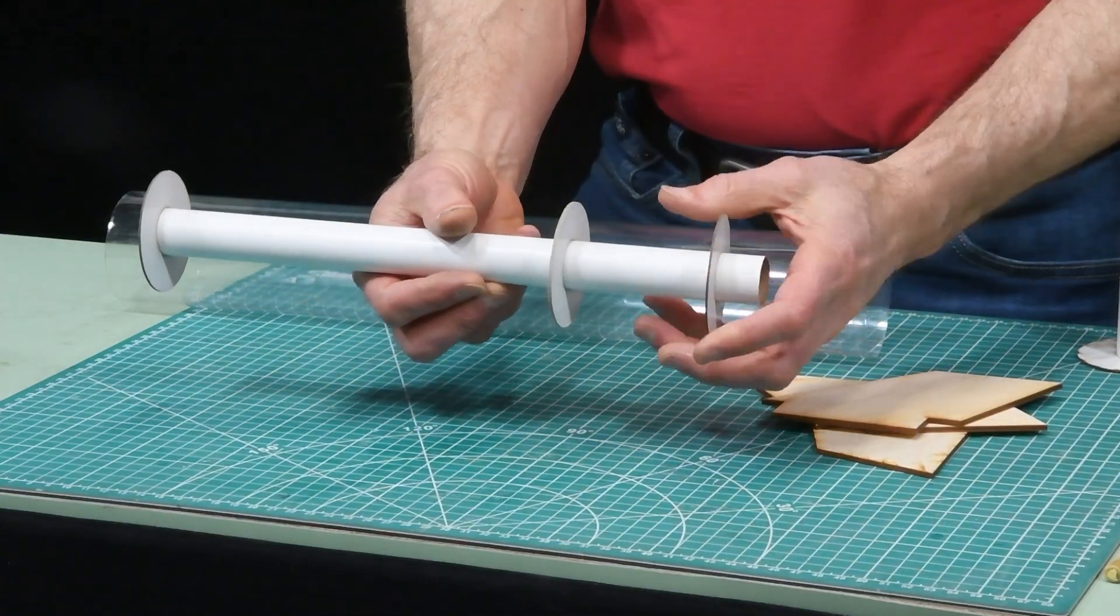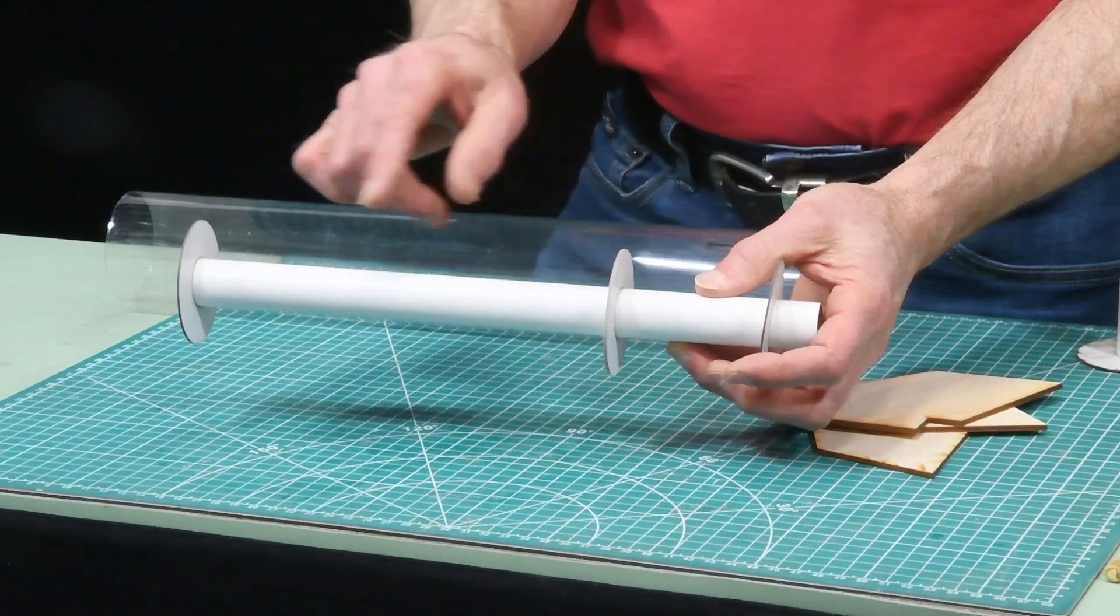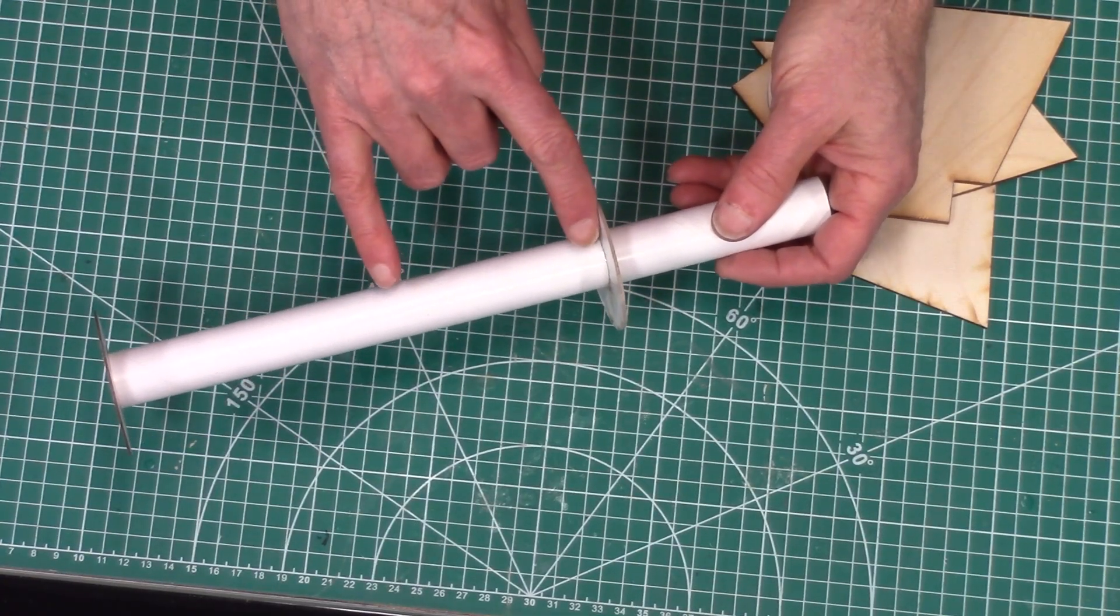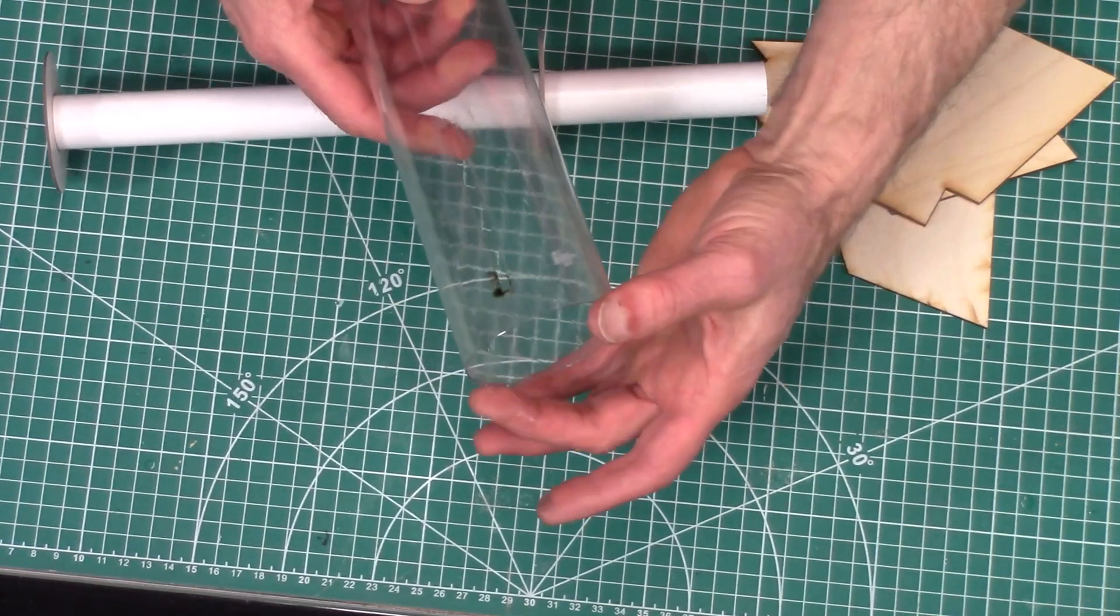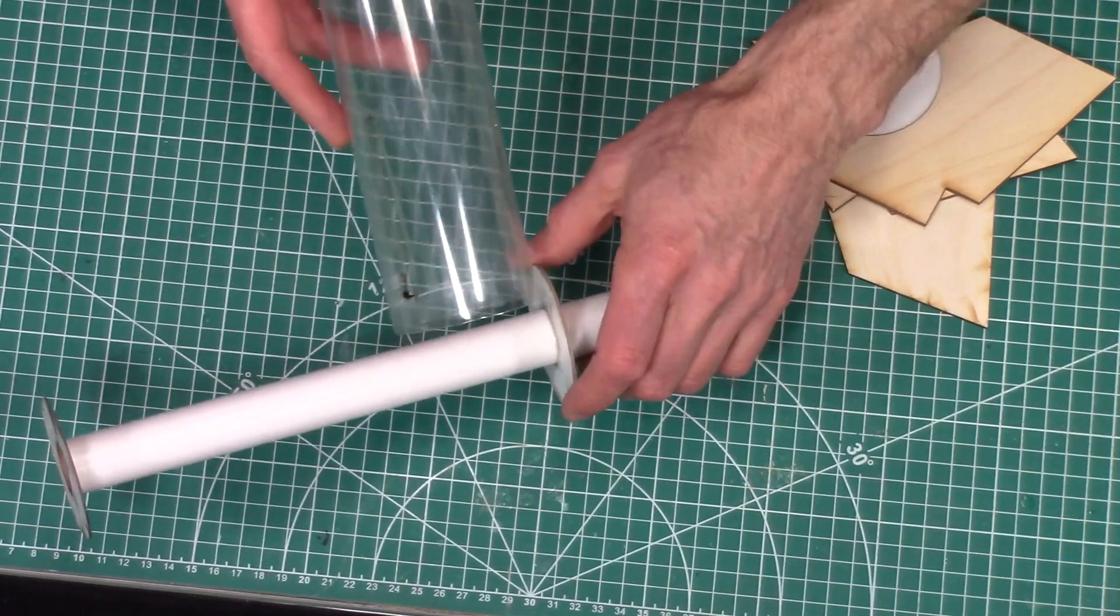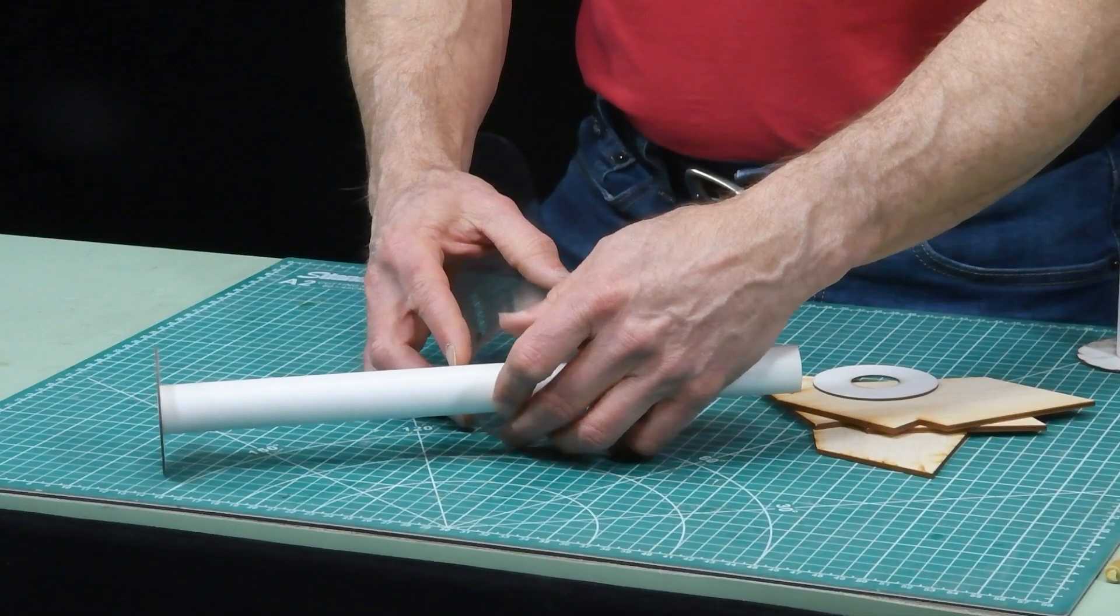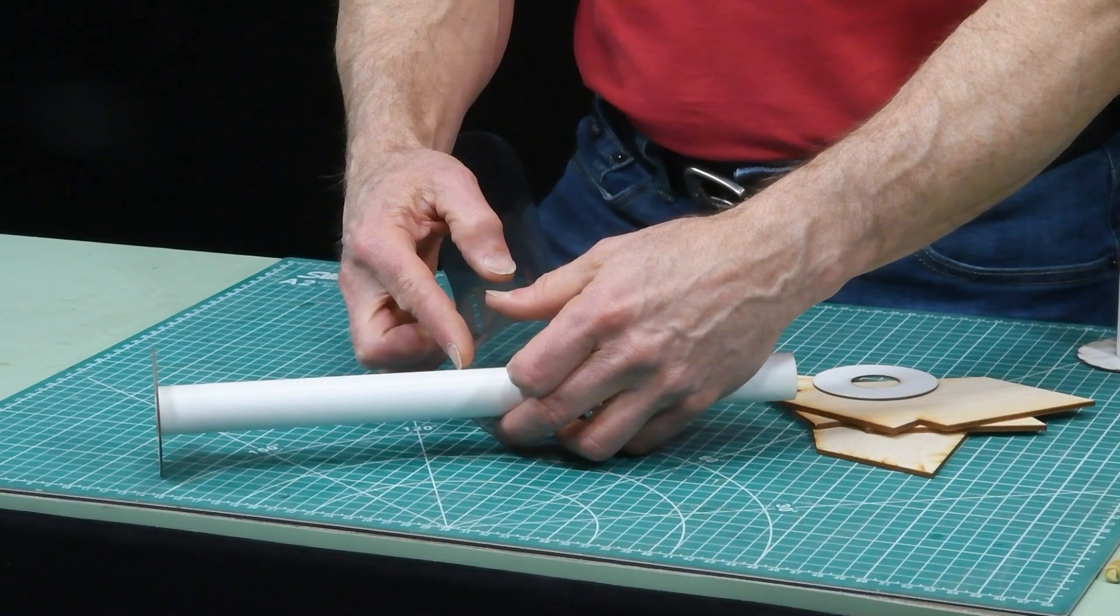When you design a motor mount tube that has three rings though make sure that the distance between the front two rings is greater than the body tube diameter. So if I take my body tube diameter the furthest back that I would want this front centering ring would be right here.